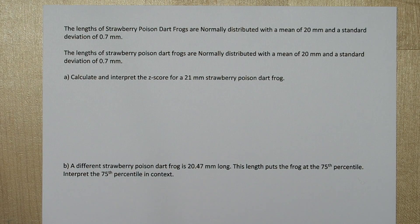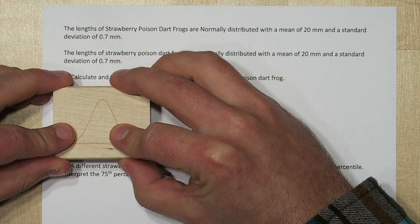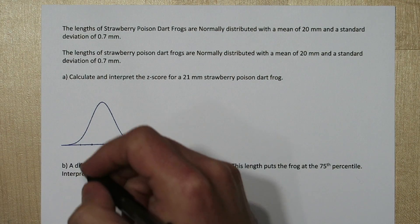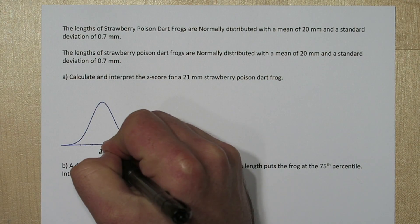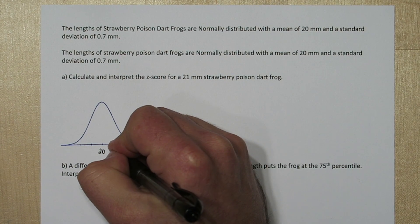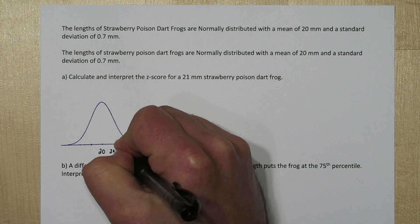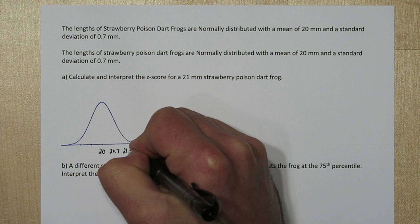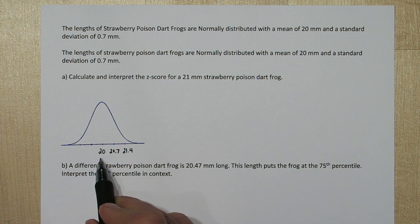Since we know strawberry poison dart frogs are normally distributed, let's start by stamping a normal distribution. So the mean is 20, that's the middle of our distribution, and since the standard deviation is 0.7, I know right here is 20.7, and right here is 21.4.